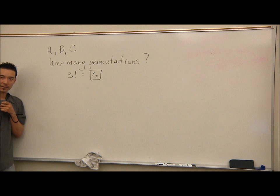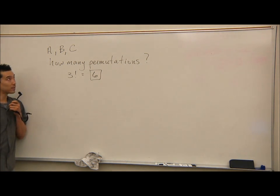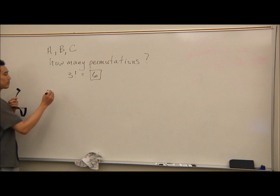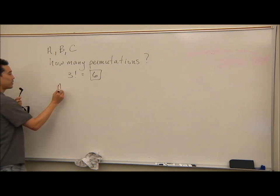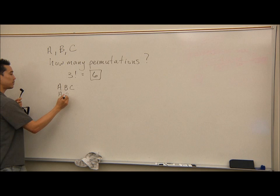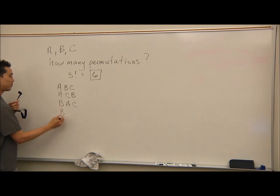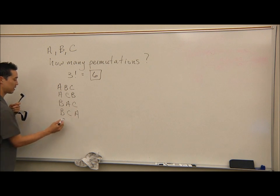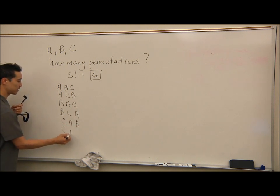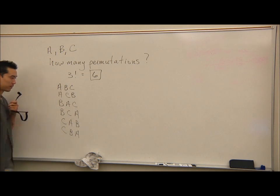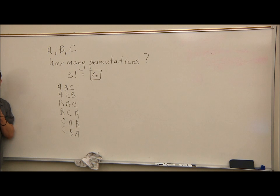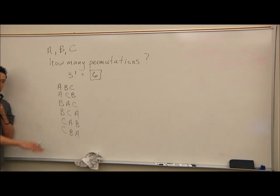Let's list all 6 arrangements: A-B-C, A-C-B, B-A-C, B-C-A, C-A-B, and C-B-A. This is every possible arrangement, every order possible. That's what we mean by permutations — these are the 6 permutations.